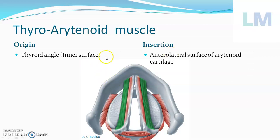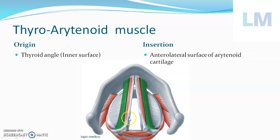The thyroarytenoid muscle — as the name suggests, 'thyro' refers to the thyroid cartilage and 'arytenoid' means the arytenoid cartilage. But where exactly? The inner surface of the thyroid angle goes backwards and slightly upwards to the anterolateral surface of the arytenoid cartilage. I repeat: inner surface of the thyroid angle goes backwards and upwards to get attached to the anterolateral surface of the arytenoid cartilage.